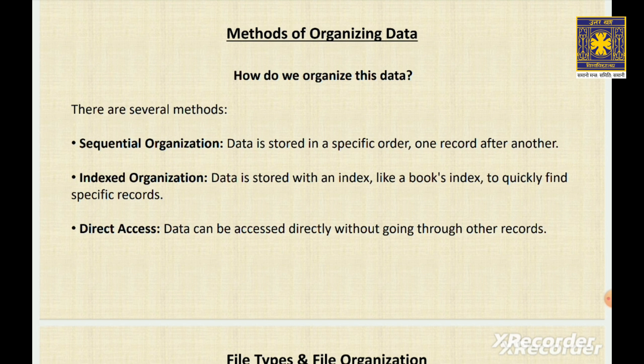The first is sequential organization. Imagine a long line of people waiting for a movie ticket, one behind the other — this is how sequential organization works. Data is stored in a specific order, one after the other. It's simple and easy to understand, but can be slow if you need to find something in the middle or end of the line.